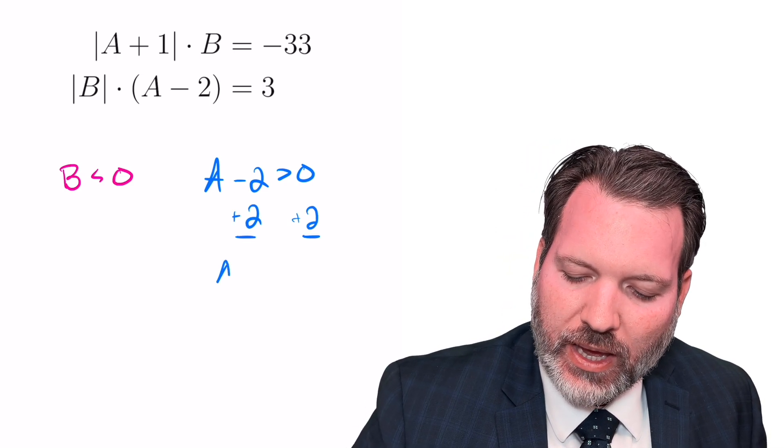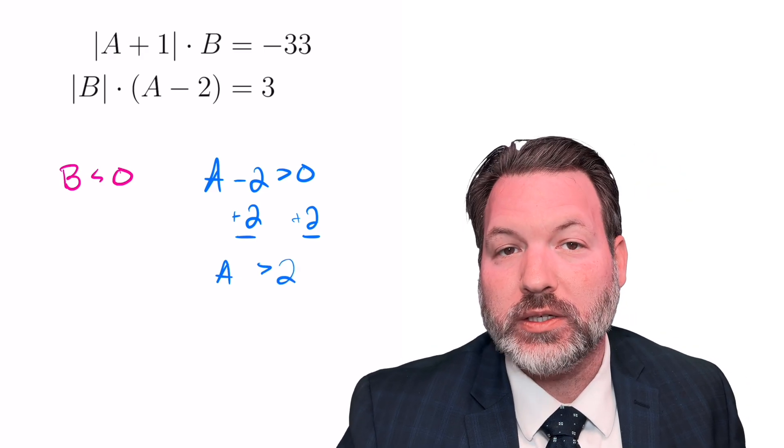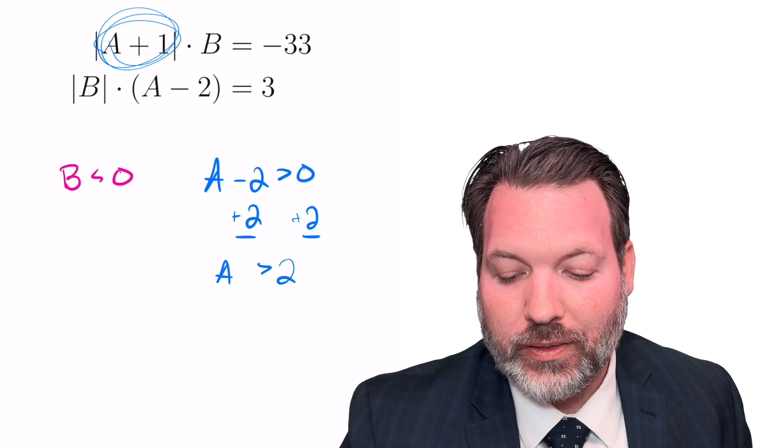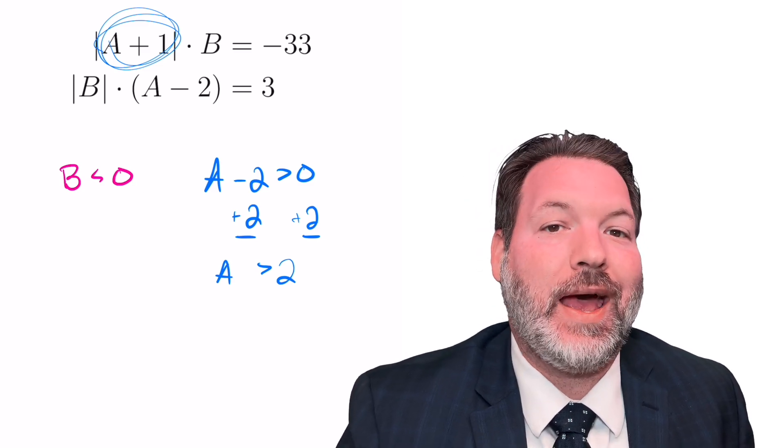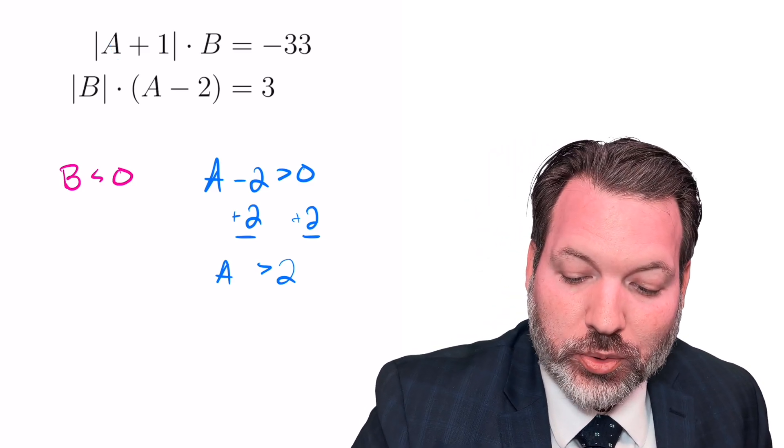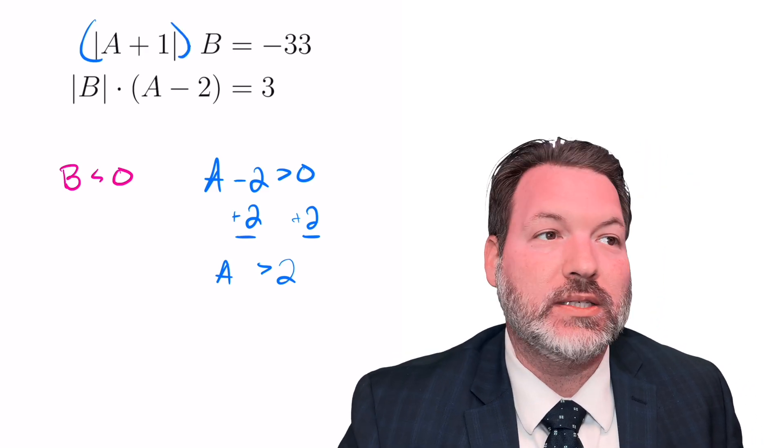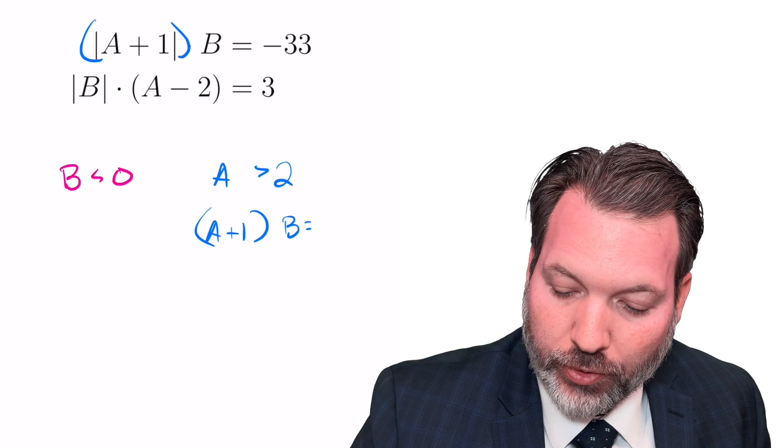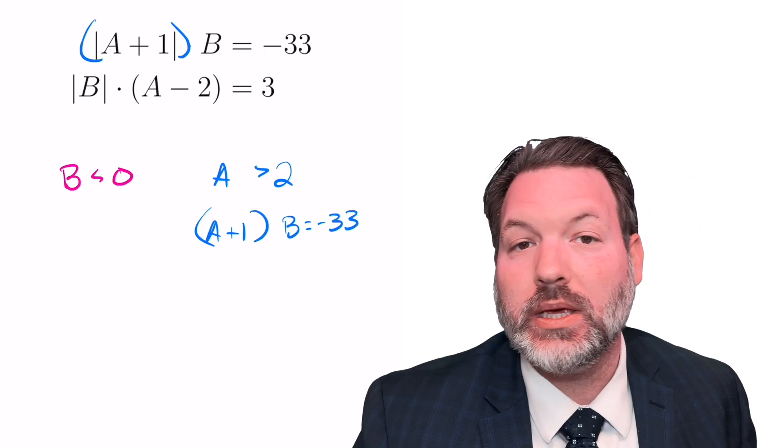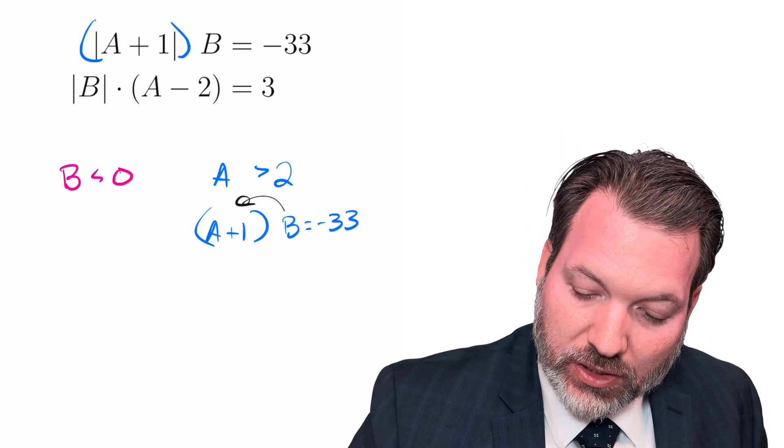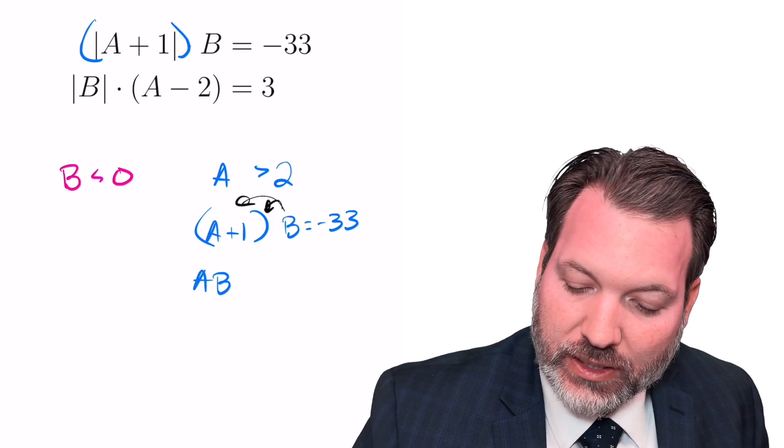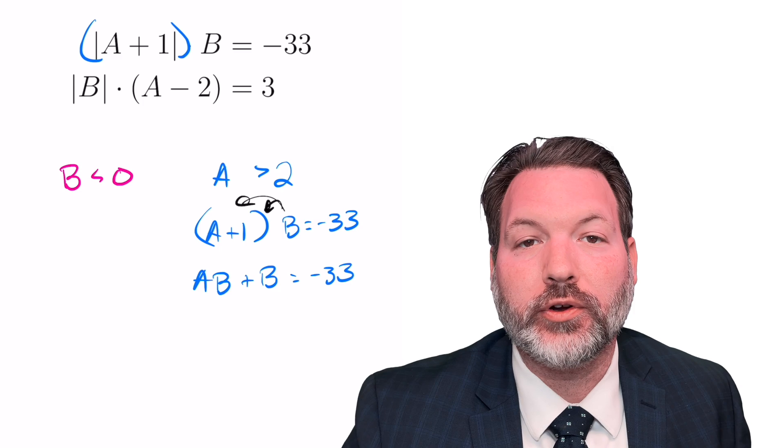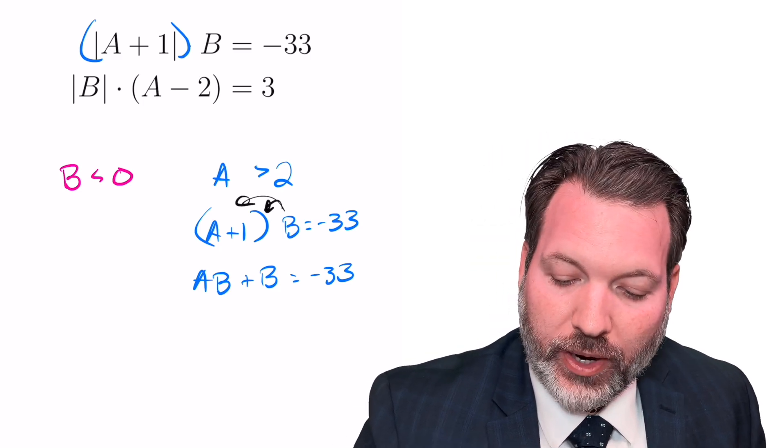If we know that a minus 2 is greater than 0, then for sure we can say a itself must be greater than 2. And if a is greater than 2, a plus 1 is also greater than 2, meaning the absolute value there isn't actually doing anything. We can treat it like regular old parentheses instead of absolute value. So a plus 1 in regular old parentheses times b equals negative 33. Let's distribute that b. That's going to give us a times b plus b itself is what's equal to negative 33.